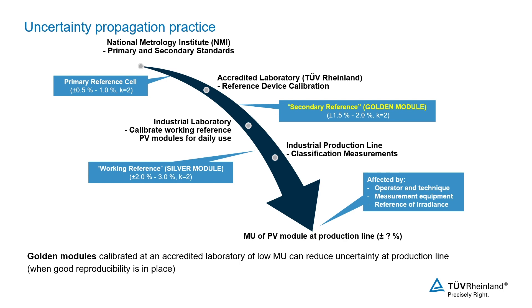What I'm sharing with you on the screen is the measurement traceability chain. On top of the chain stand the NMIs, the National Metrology Institutes. They will provide the primary reference cell to accredited laboratories like TÜV Rheinland, where we will perform a secondary reference device calibration.